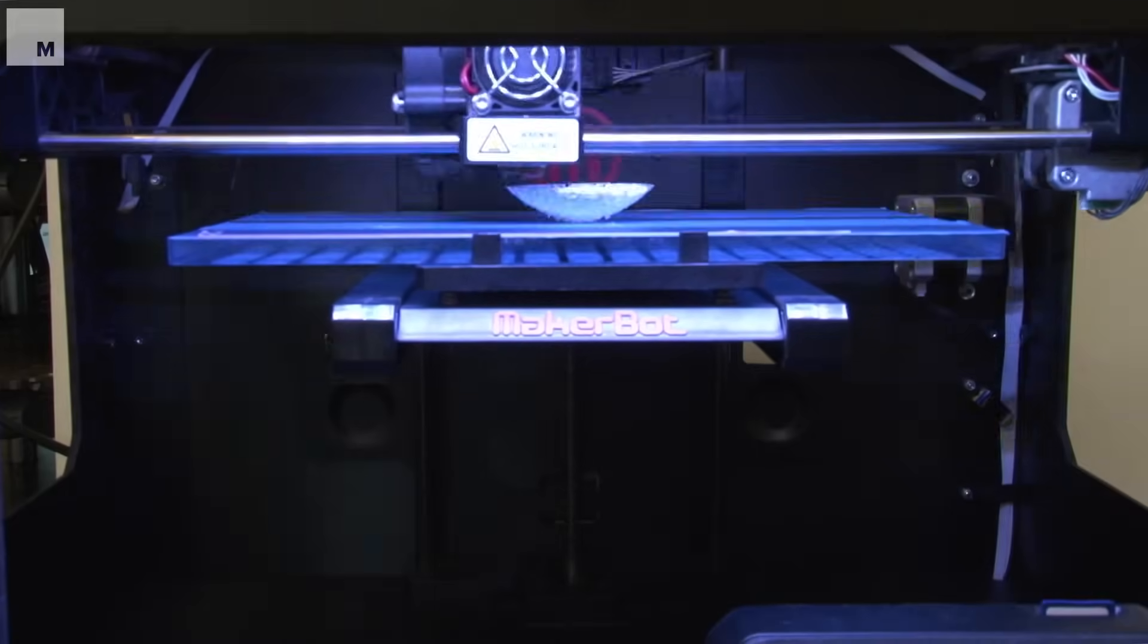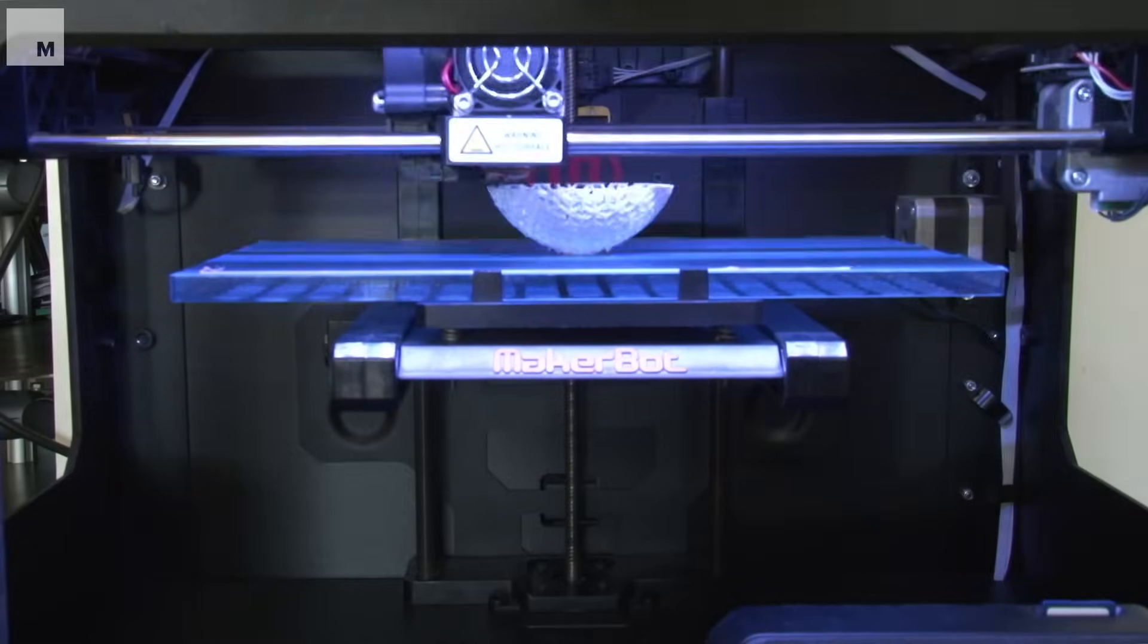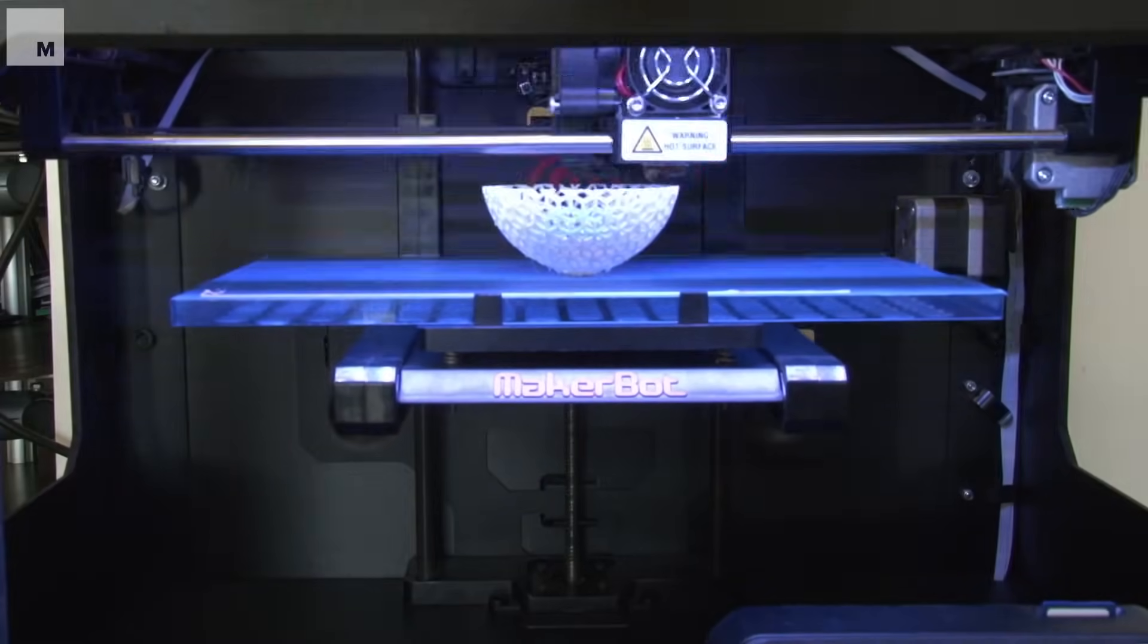As you can see, the 3D object is created through layering, where the printer will add one layer of the object at a time until you have a fully formed structure.